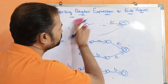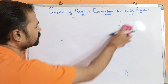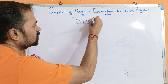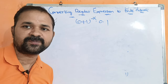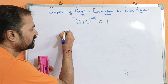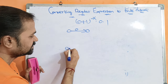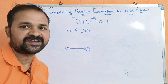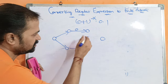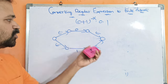Now let us see an example to convert a regular expression into finite automata. Let the regular expression be (0 plus 1) whole star into 0 into 1. First we have to represent 0 plus 1. For representing 0 we require two states, for representing 1 we require two states. Plus means union, so we require two more states for the union operation. We apply epsilon symbols and represent 0 plus 1 like this.